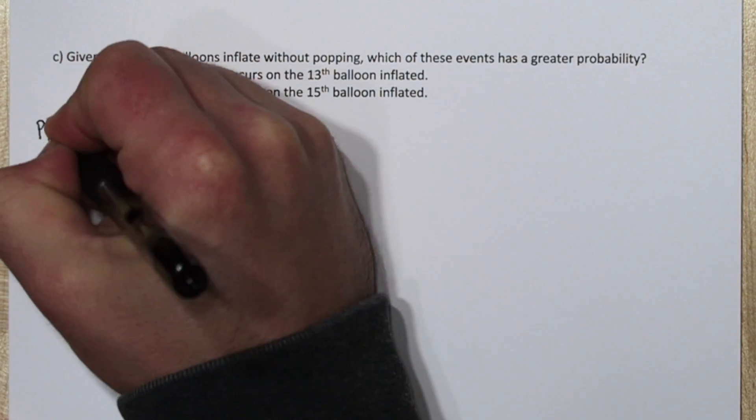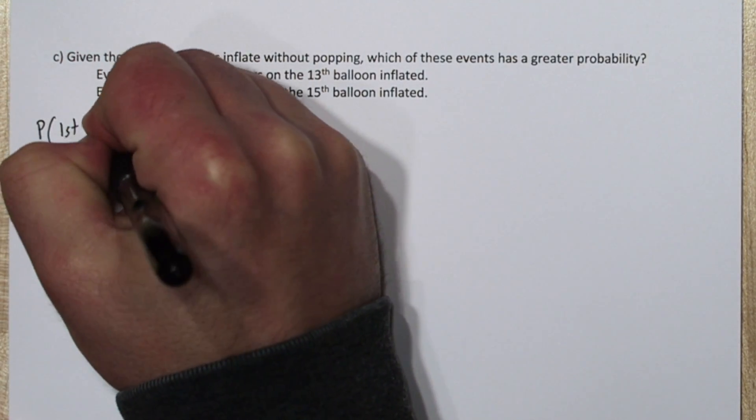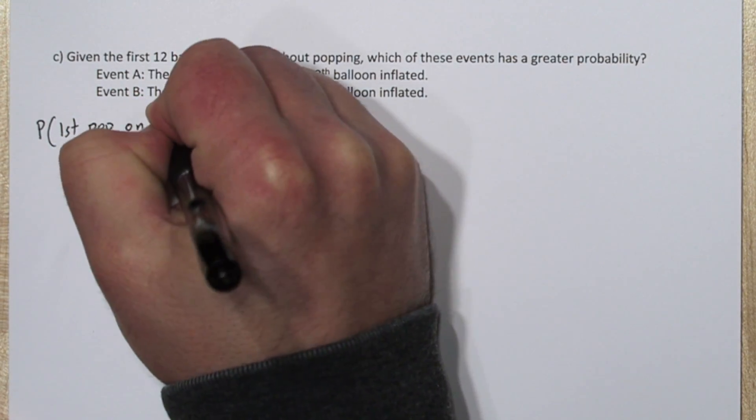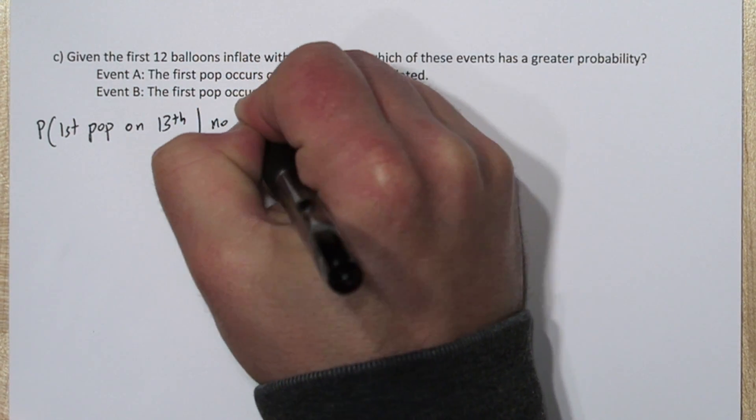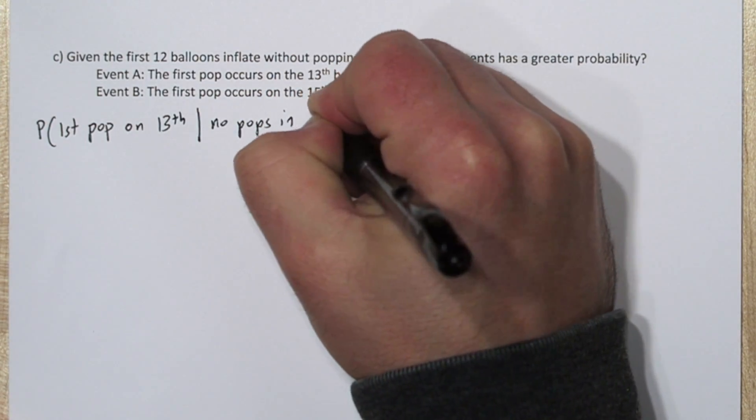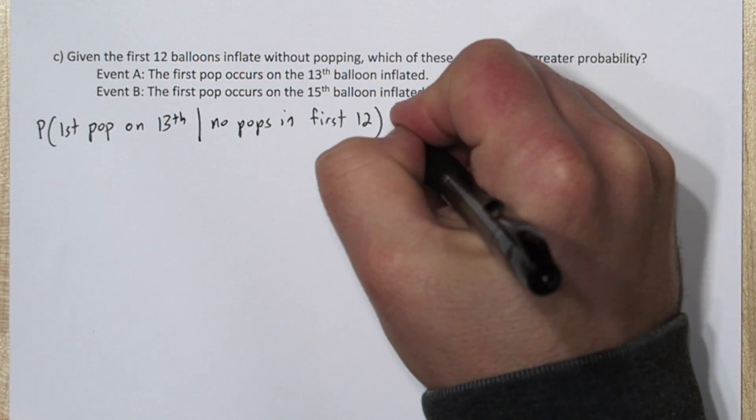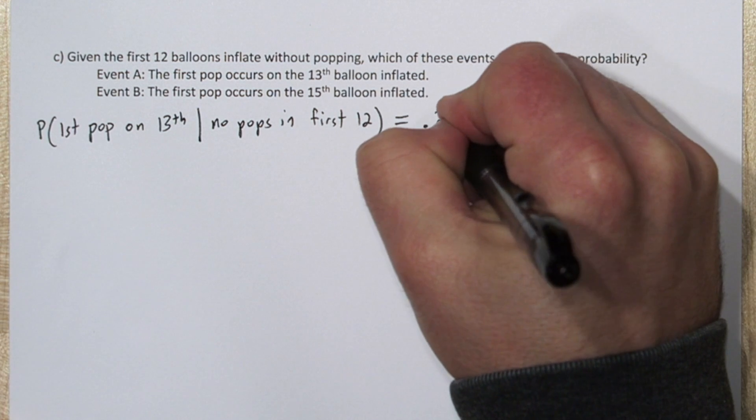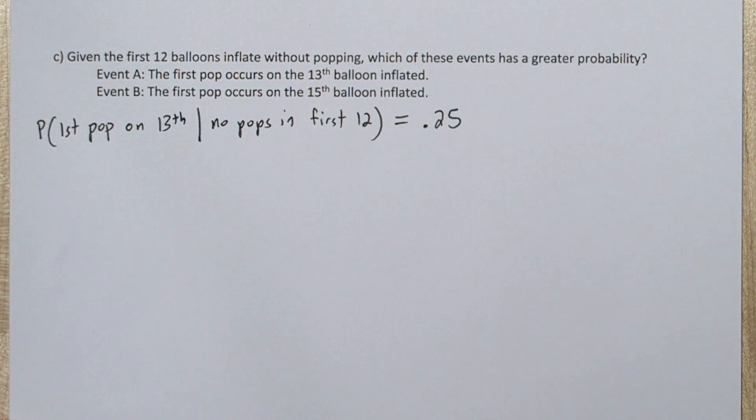Since each balloon's failure is independent of all the other balloons, it doesn't really matter that none of the previous 12 balloons have popped. The probability that the 13th balloon pops is 0.25. So the probability our first pop occurs on the 13th balloon, given there was no pops in the previous 12, is 0.25.